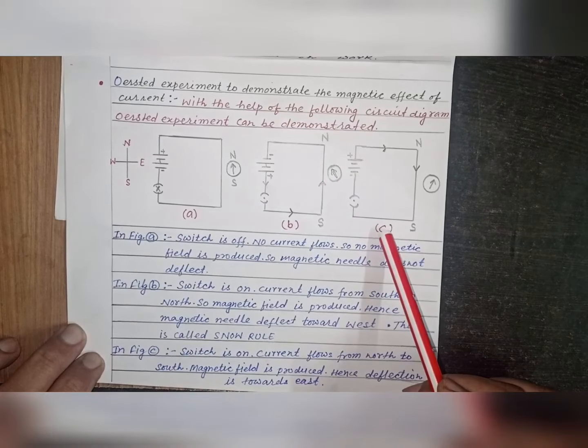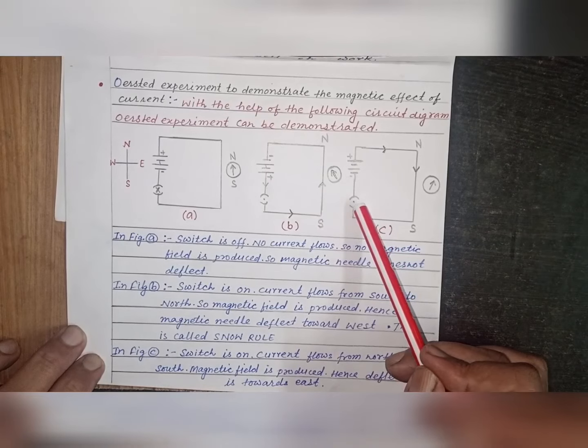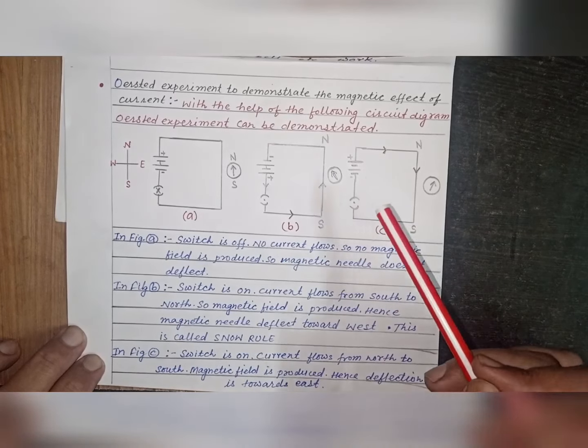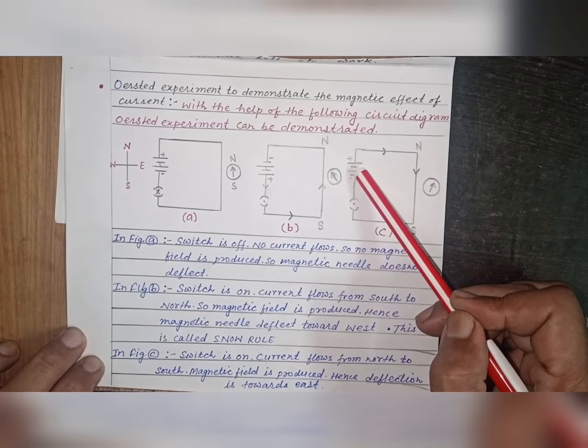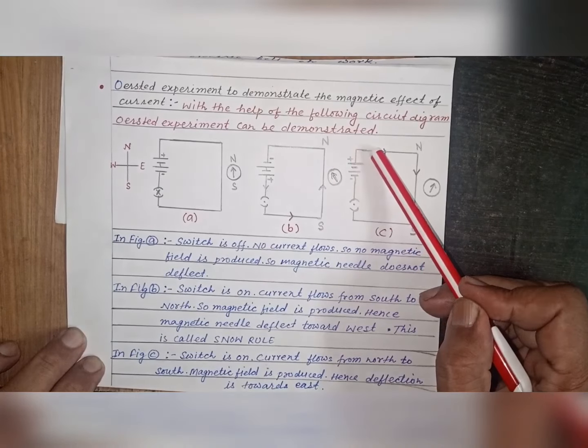Figure C. Switch is ON. Battery is reversed. Hence, current is also reversed.